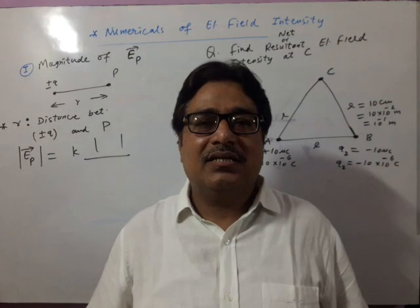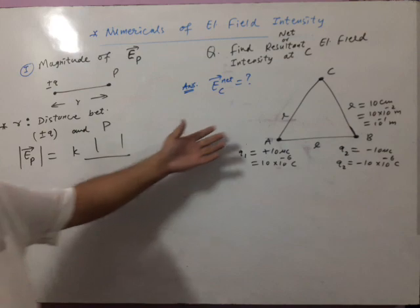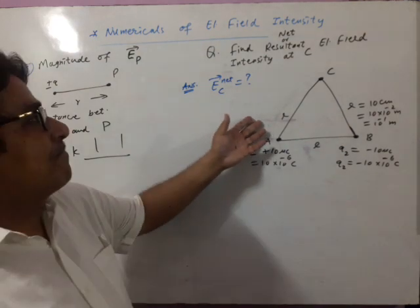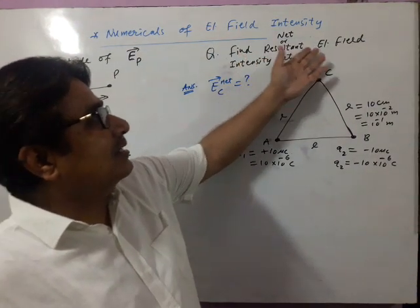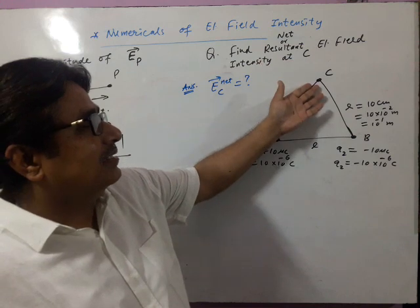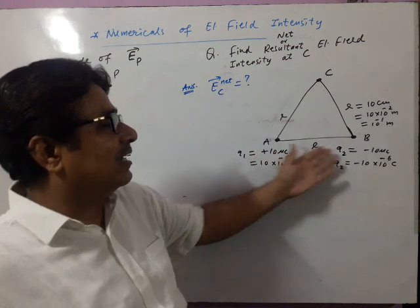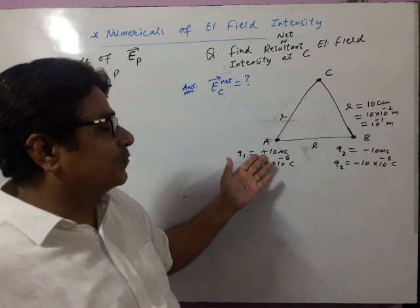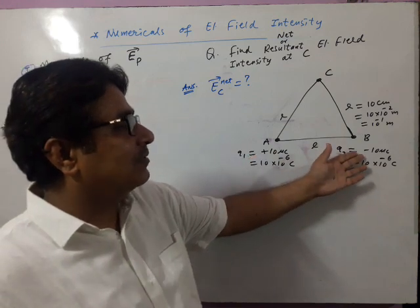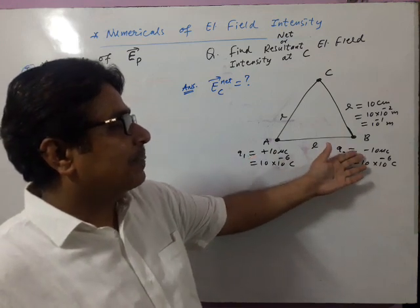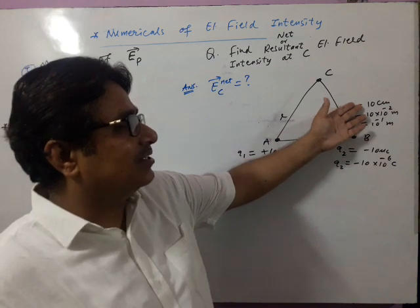Numericals of electric field intensity. Find net or resultant electric field intensity at C, due to these two charges Q1 and Q2, of values plus 10 micro coulomb and minus 10 micro coulomb. This is an equilateral triangle of side 10 cm each.